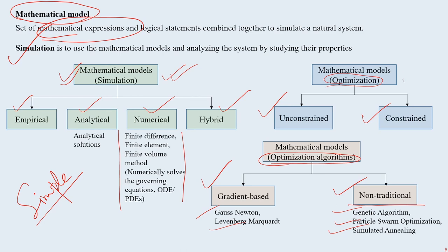Continuing from last class on modeling and simulation applications in agriculture for natural resource management. In the last lecture, we discussed mathematical models - two types: simulation and optimization - and under both these types we have different kinds of sub-model functions. We also discussed optimization algorithms: gradient-based and non-traditional algorithms.